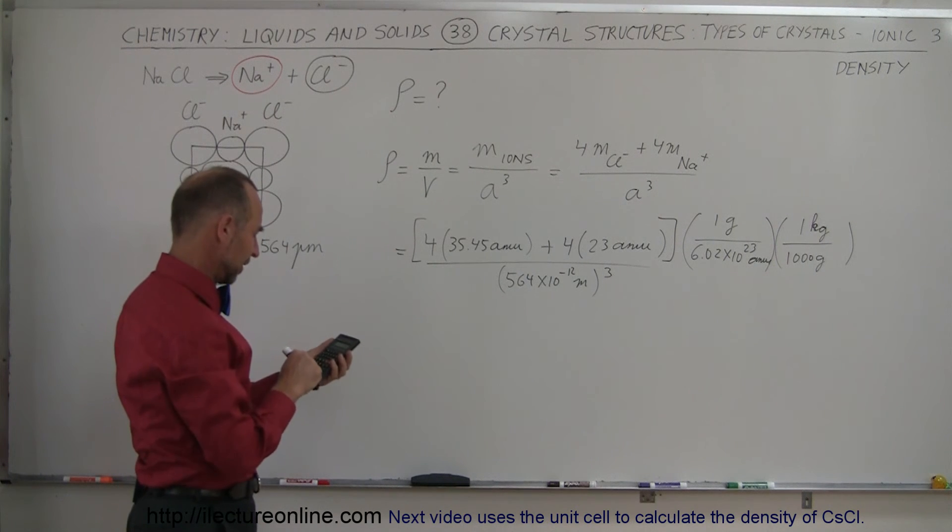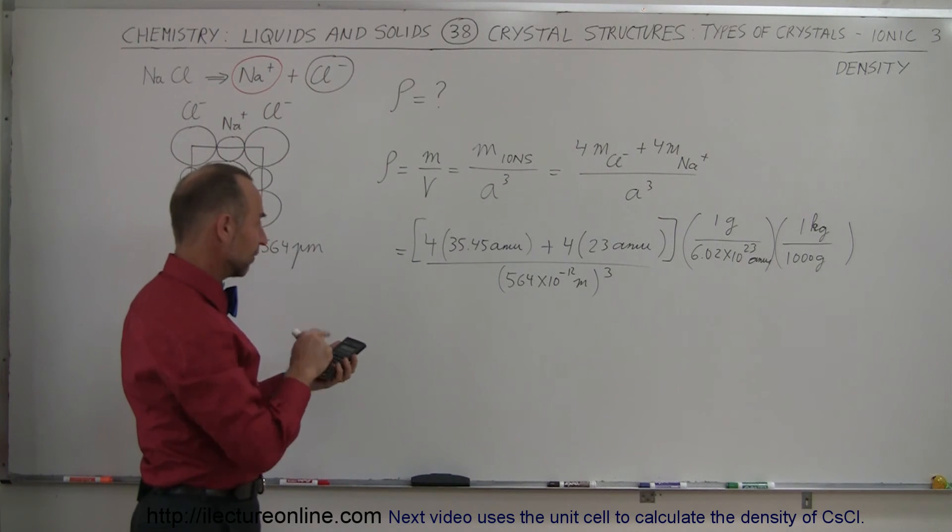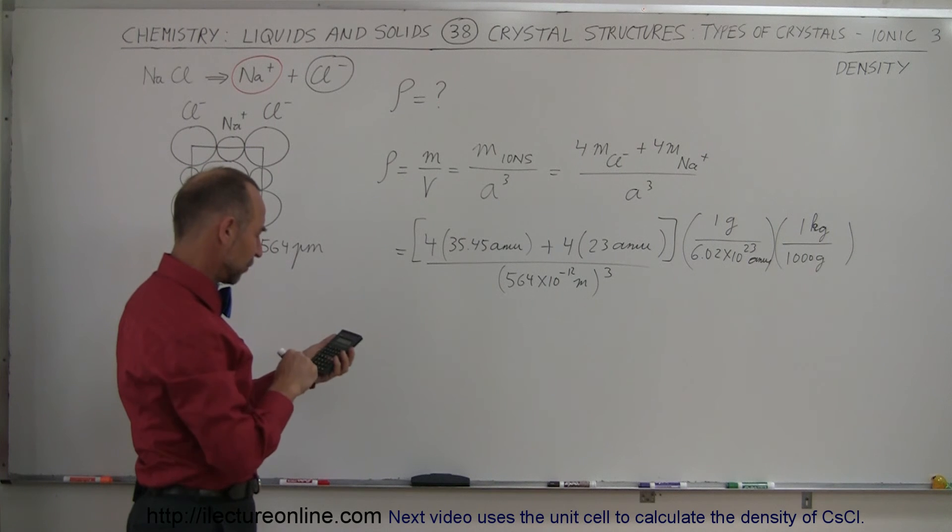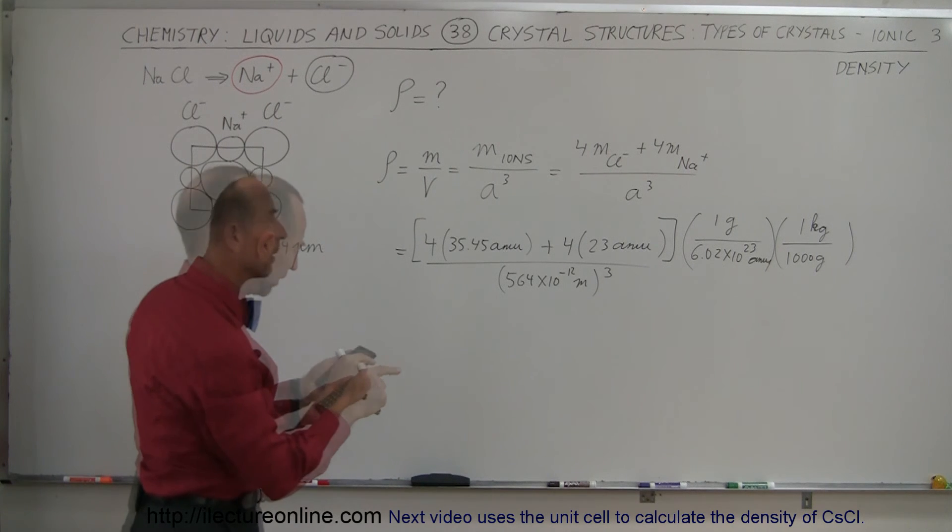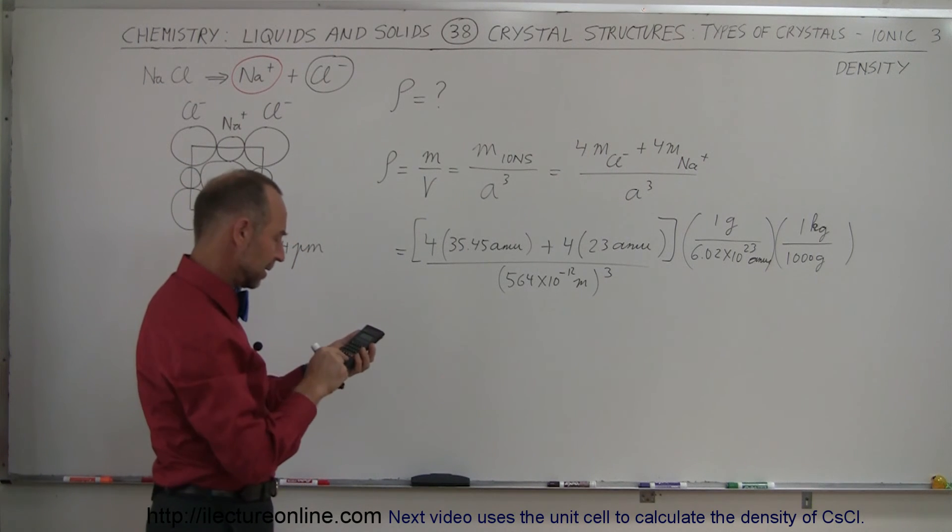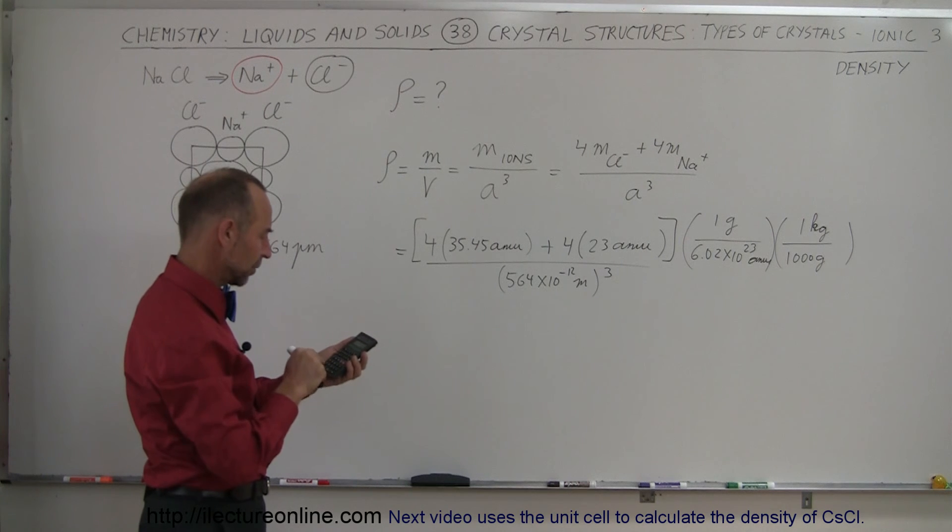35.45 times 4 plus 23 times 4, divide that by 564E to the 12 minus cubed, and then we multiply, multiply that by 6.02E to the 23, and then divide by 1000 equals.